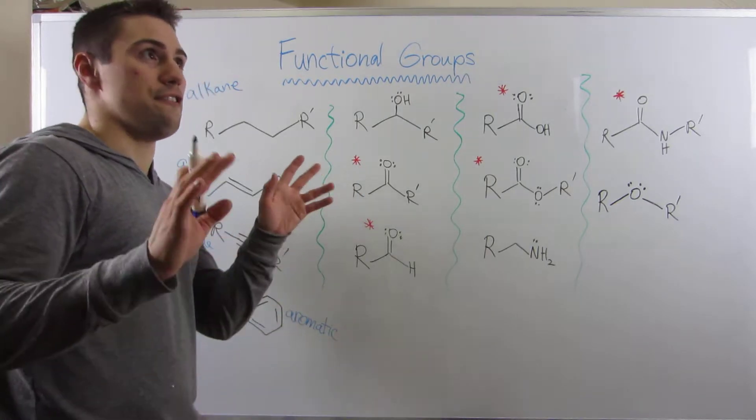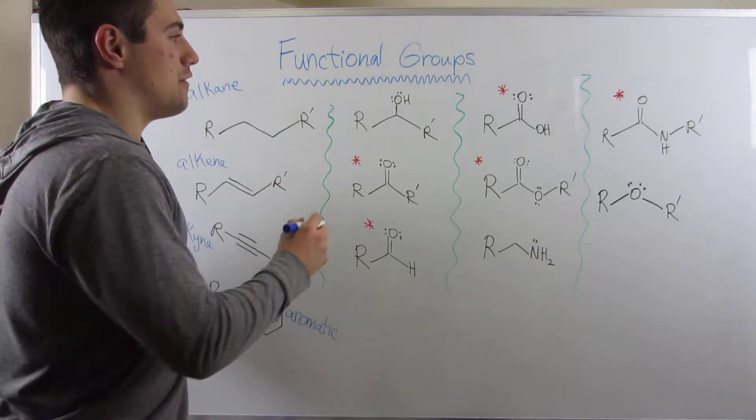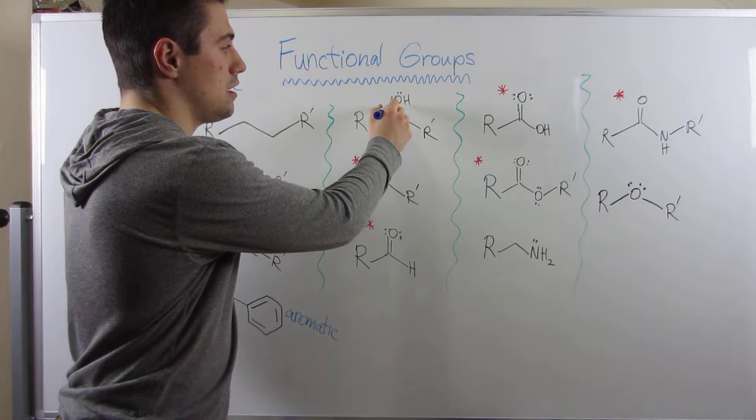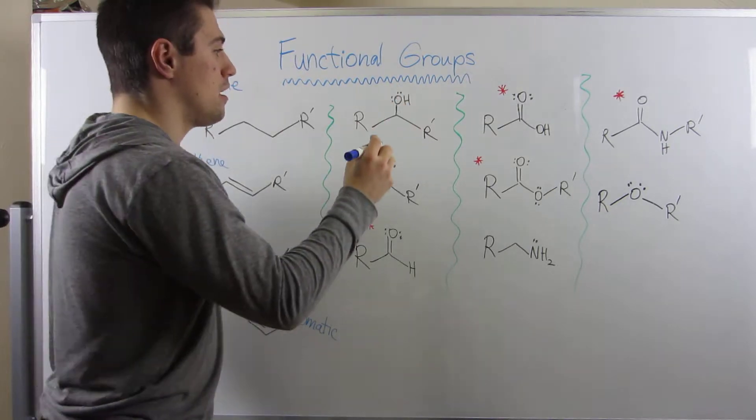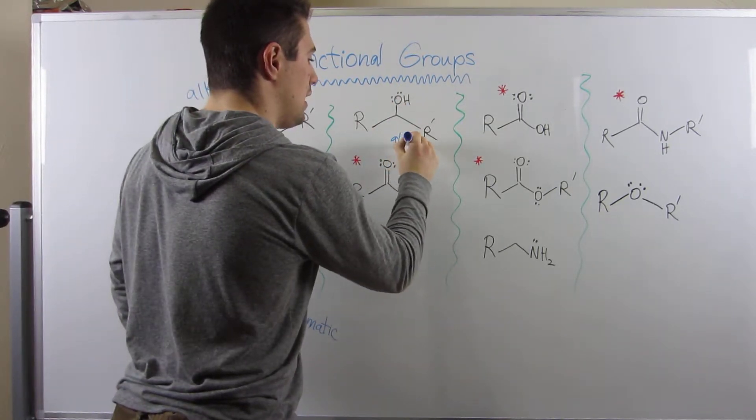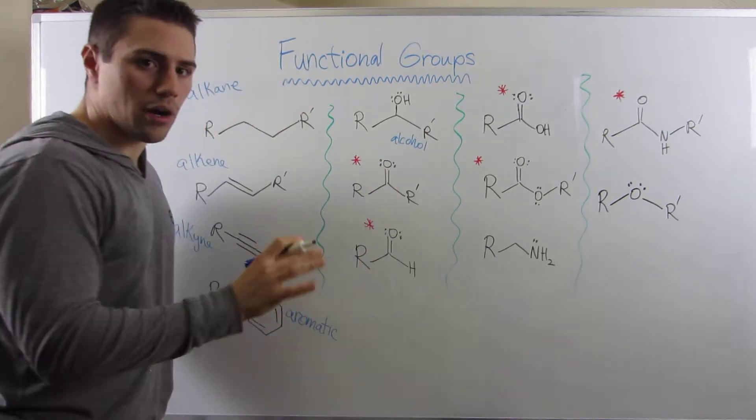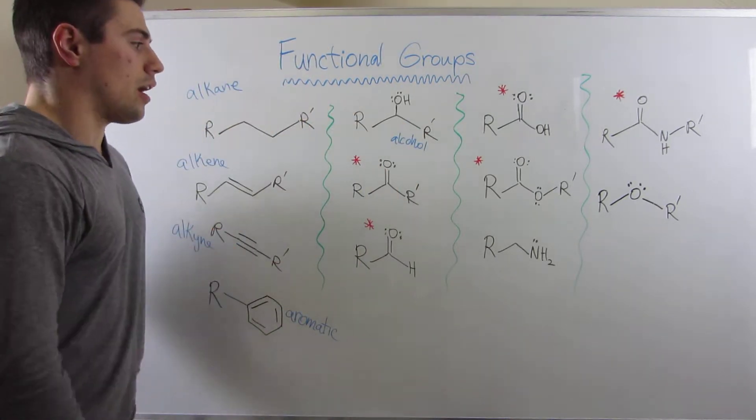Okay, so now let's move up here. Everyone's favorite functional group. If you ever see this type of OH off of a chain, this is what's called an alcohol. So an alcohol functional group, super easy to pick out.